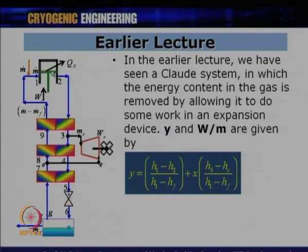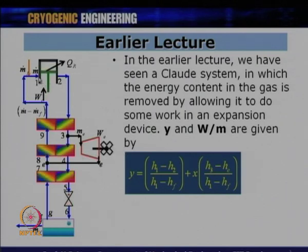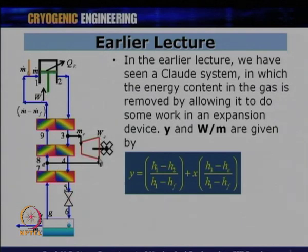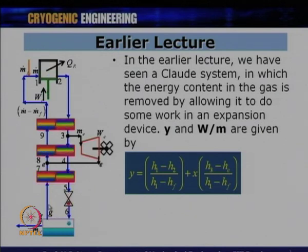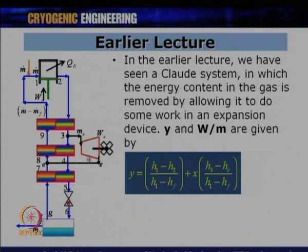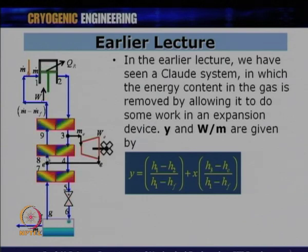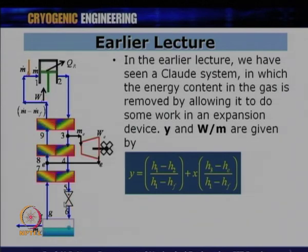To recap the cycle: we have a compressor, three heat exchangers (1, 2, and 3), and an expander that provides work output. The gas gets compressed, pre-cooled, and a portion amounting to Ṁ_E is taken off and expanded to low temperature from point 3, meeting the return stream at point E. The remaining gas (M minus M_E) undergoes isenthalpic expansion from 5 to 6, producing liquid. The return gas (M minus M_F minus M_E) warms up to point 7, joins at point E, reaches point 8, warms to point 1 where makeup gas enters, and the cycle repeats.